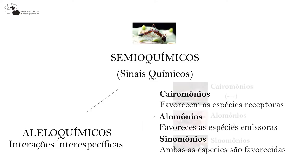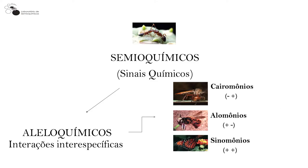Os cairomônios favorecem as espécies receptoras do sinal. Por exemplo, temos um sistema onde um besourinho emite um sinal para chamar seus companheiros de espécie, mas seu inseto predador consegue decifrar esse código. O cairomônio prejudica quem emite o sinal — o inseto que está sendo localizado — e beneficia quem recebe, ou seja, o predador que o localiza pelo odor.